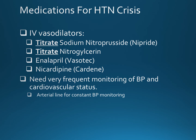Medications for a hypertensive crisis include IV medications such as sodium nitroprusside (Nipride), which is a potent vasodilator titrated as a continuous IV drip. Nitroglycerin is also infused in the same way and is slightly less potent than Nipride. With titration of vasoactive drugs, an arterial line will need to be placed in the radial artery to constantly monitor blood pressure.